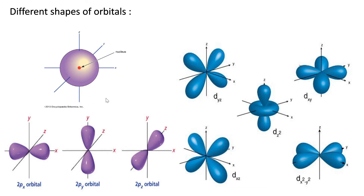The accommodation power of each orbital is 2 electrons — it can accommodate either 1 or 2 electrons, but not more than 2 electrons.